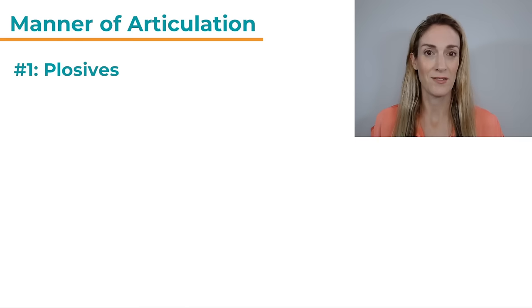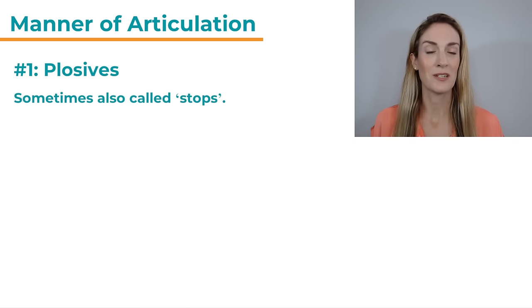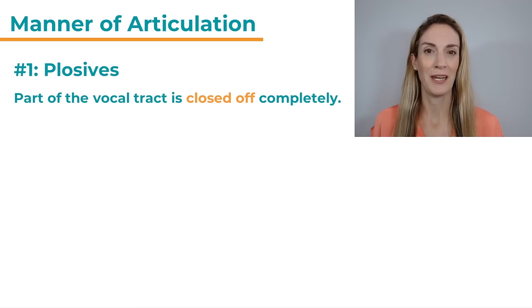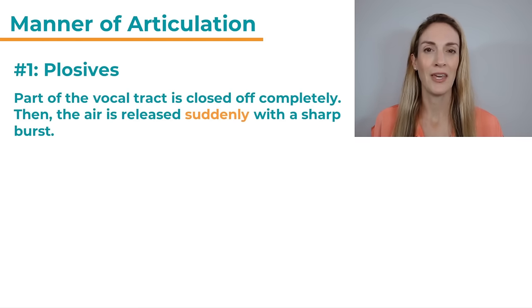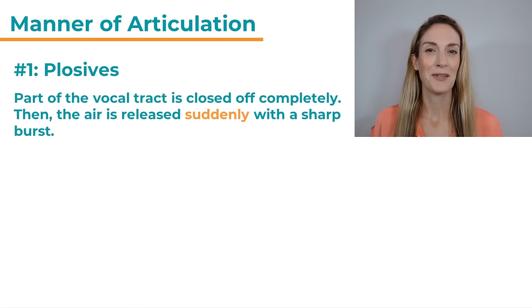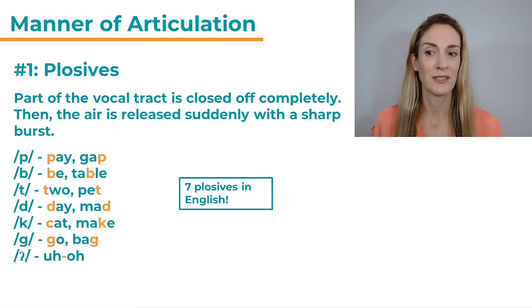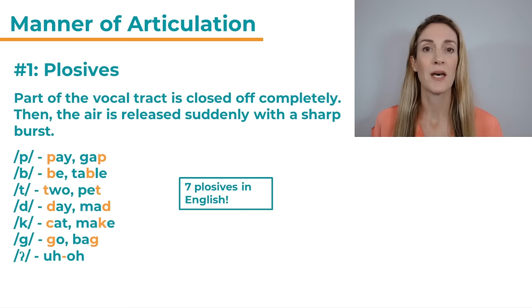First of all, we have plosives. Sometimes they are also called stops, so you will see both of those terms being used. How are they formed? Part of the vocal tract is closed off completely, so there will be full closure and no air can escape. But then the air is released suddenly with a sharp burst, and that suddenly is really important because it leads to this little explosion of air. That's where we get the word plosive from. You can see the closure is formed with both lips — P, B.